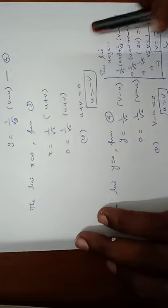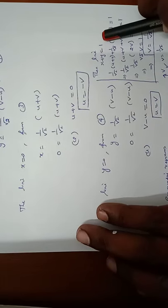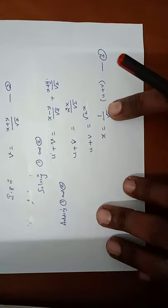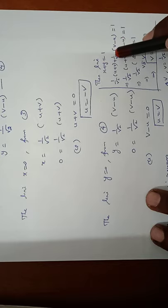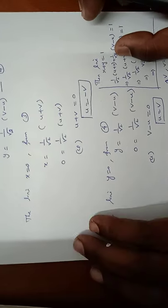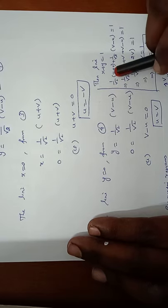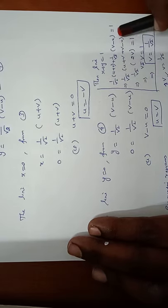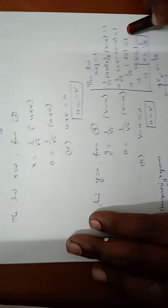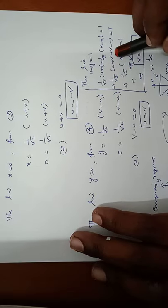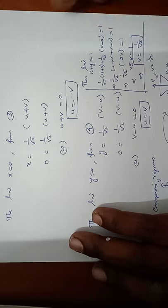For the third line x plus y equal to 1, substituting x equals 1 by root 2 into u plus v and y equals 1 by root 2 into v minus u: 1 by root 2 into u plus v plus v minus u equals 1. The u terms cancel, giving 1 by root 2 into 2v equals 1, so root 2 times v equals 1, therefore v equals 1 by root 2.